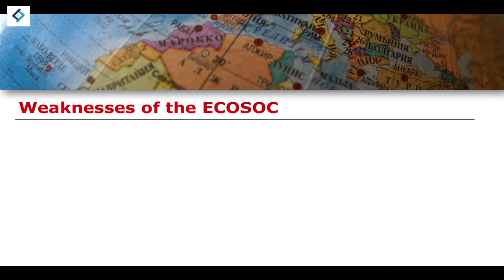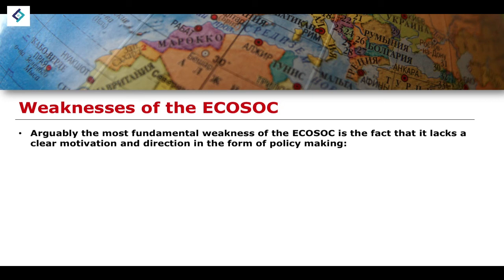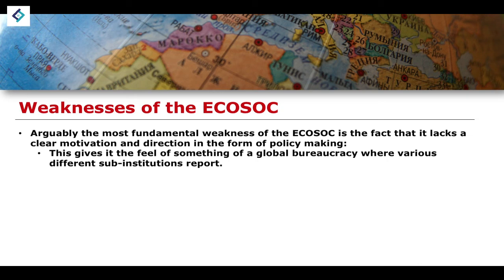What about the weaknesses? Arguably the most fundamental weakness is that ECOSOC lacks a very clear motivation and direction in the form of policymaking. It seems to have quite a broad mandate covering economic, social, and environmental development, but it doesn't really specify what these things actually entail. This creates a global bureaucracy where sub-institutions like the WHO and the High Commission for Refugees report to UN ECOSOC, rather than ECOSOC actually doing anything specifically itself. There's no real direction — just a broad mandate.